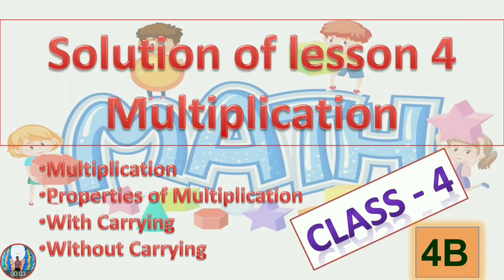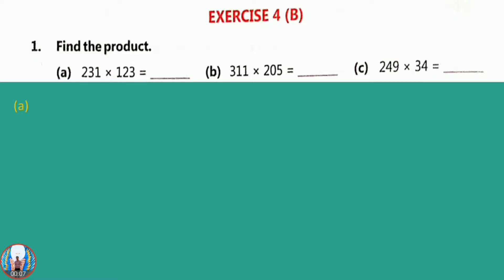Solution of Lesson 4, Multiplication, Class 4, Exercise 4b, Question 1: Find the product. Here 231 into 123. First of all we will write 231 into 123, then we will multiply 3 by 231, that is 693. Then we will multiply by the tens place, that is 2.